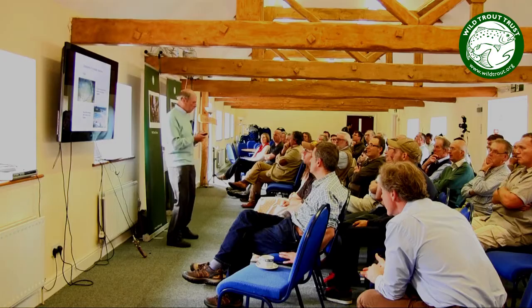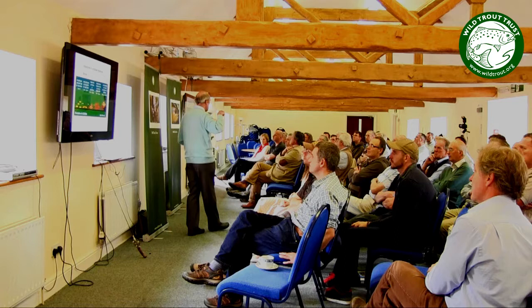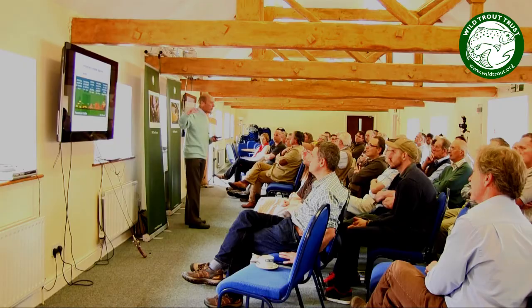That's exopolymer produced by algae. There are other groups of single-celled organisms that also produce exopolymer, and amongst the most important are bacteria. In this cartoon running from left to right, we begin with the bacterium in its motile stage — they do swim by means of bacterial flagella. They then settle onto a substratum and produce exopolymer to cement themselves, a process that occurs over seconds to minutes. Once the exopolymer is secreted, it's a permanent attachment. The bacteria multiply, produce more and more exopolymer, and produce a biofilm on the surface.